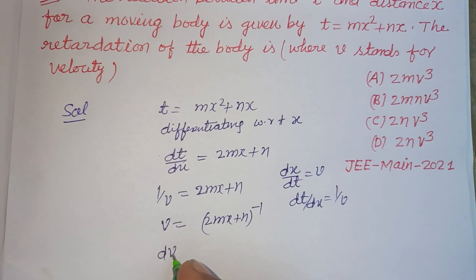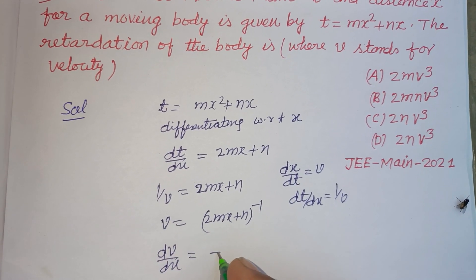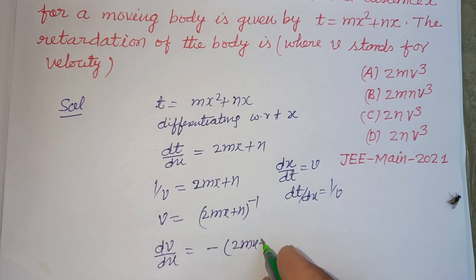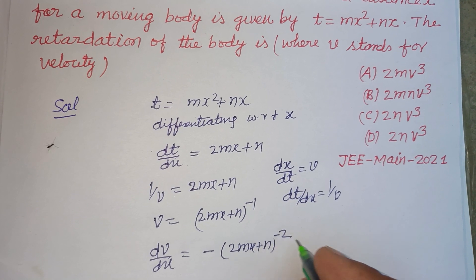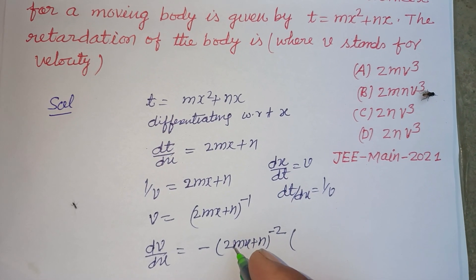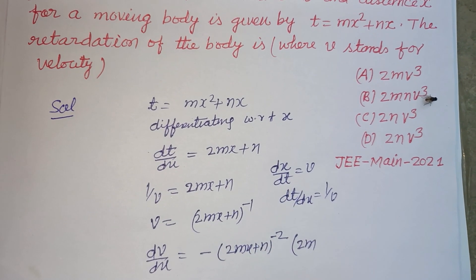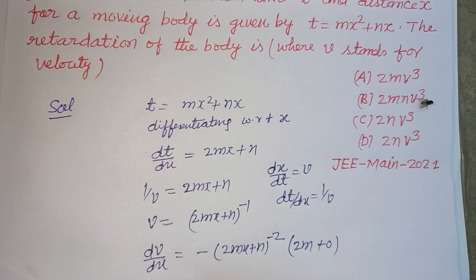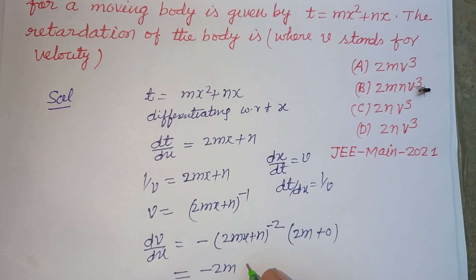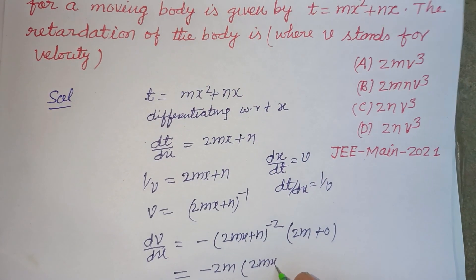So dv over dx equals minus, because minus 1 minus 1 is minus 2, and 2mx is 2 and n is 0. So finally we got minus 2m times 2mx plus n to the power minus 2.